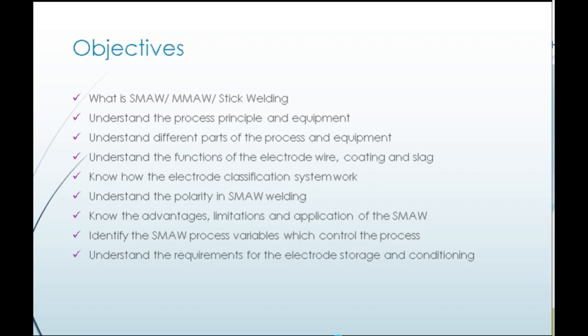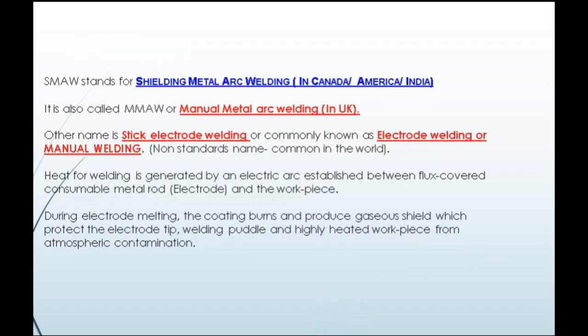SMAW stands for Shielded Metal Arc Welding. This term is used in Canada, America, and other countries except the UK. It is also called MMA or Manual Metal Arc Welding, which is the term used in the UK. Other names include stick electrode welding, or commonly known as electrode welding or manual welding. These are non-standard names used commonly in the world.